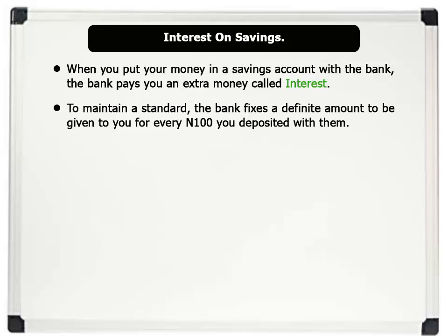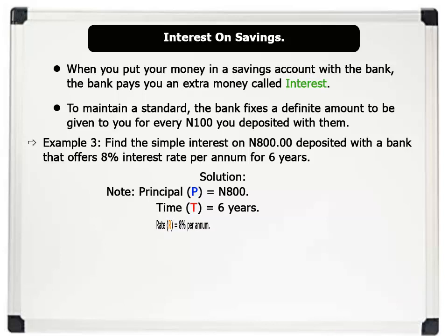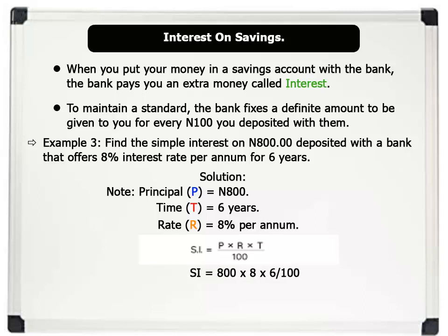Let us see an example. Example 3: Find the simple interest on 800 Naira deposited with a bank that offers 8% interest rate per annum for 6 years. Solution: Note that principal is 800 Naira, time is 6 years, and interest rate is 8% per annum. Remember our formula for simple interest: I = P times R times T, all over 100. So, simple interest = 800 times 8 times 6, divided by 100, which equals 384. Therefore, simple interest equals 384 Naira.